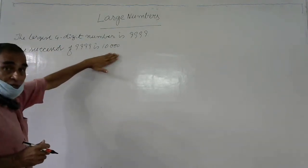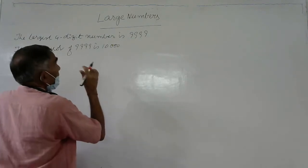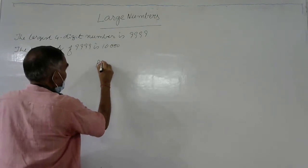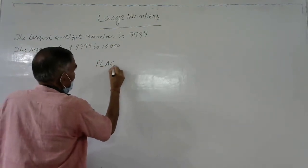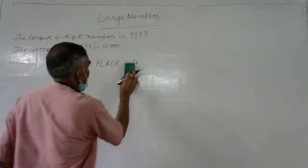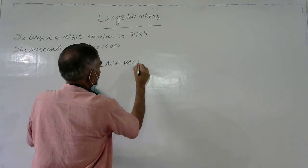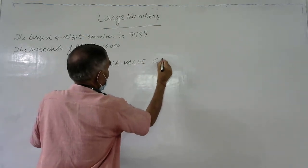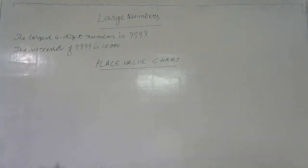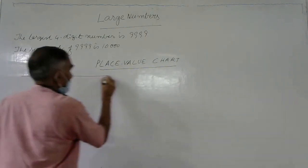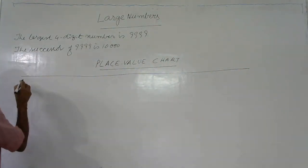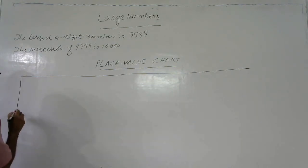Now, if we go above the largest four-digit numbers, we need a place value chart. In the last lesson, you learned about the place value chart. Now I will tell you about some more additional places in that chart.